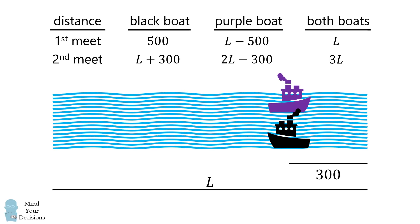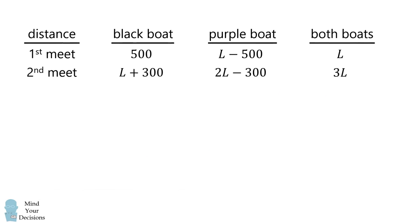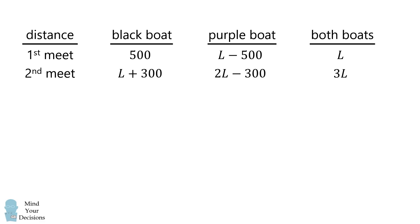We can now use this table to solve the problem. Notice the time between the first and second meeting is the same for both boats. Furthermore, each boat moves at a constant speed, so it suffices to compare the distances between the first and second meeting.